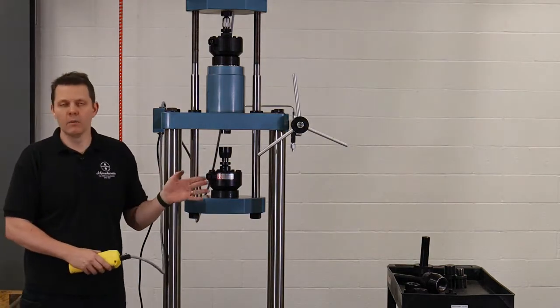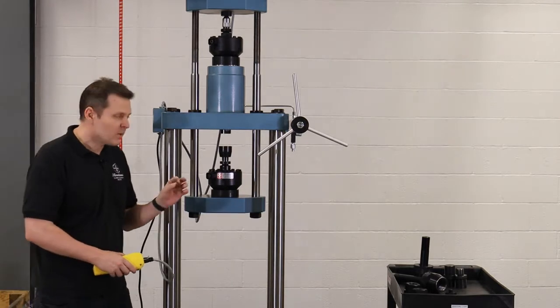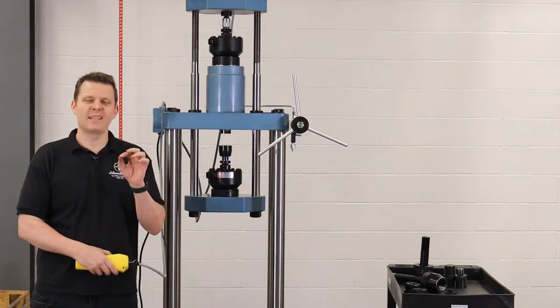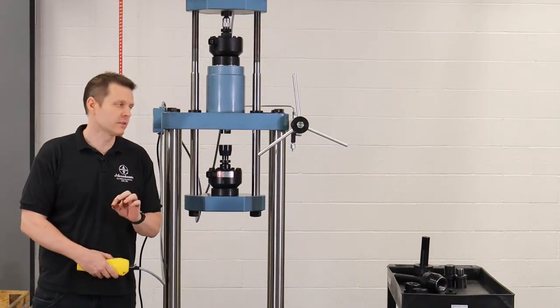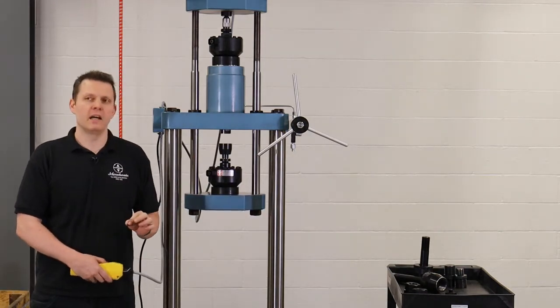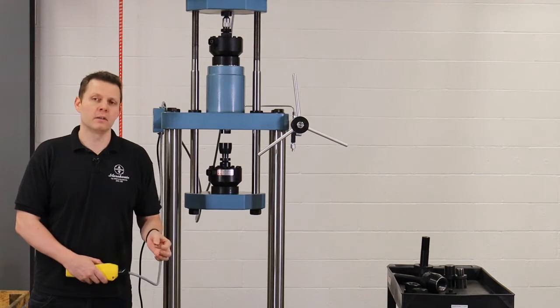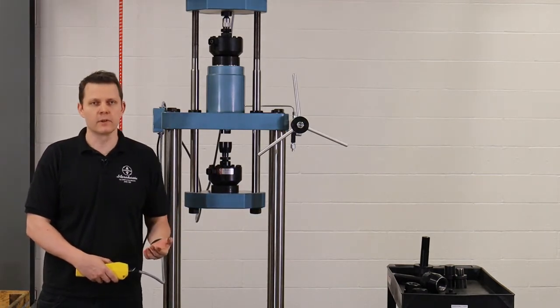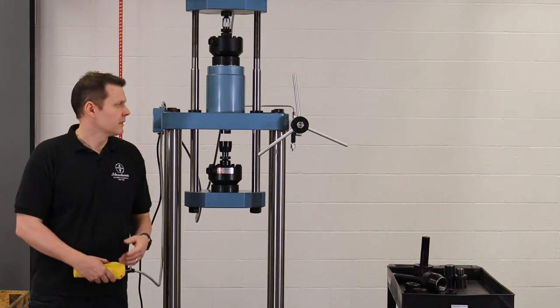This is the only trick to any of this: we run that yoke up until we just have the slightest bit of clearance, just the littlest bit of daylight. After we have this setup, our hydraulic power control, preferably because that makes it easier to control the force, or the hand pump can be used.